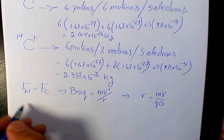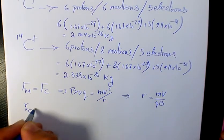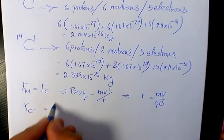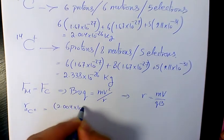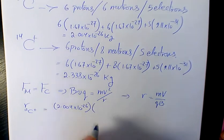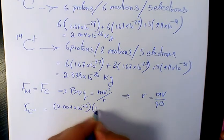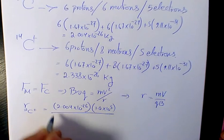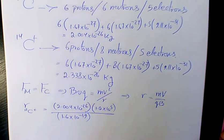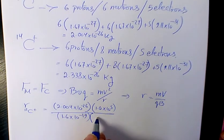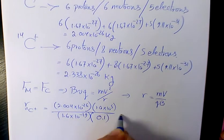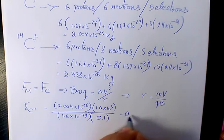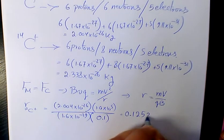For C12+, r = (2.004 × 10^-26)(1.0 × 10^5) / [(1.6 × 10^-19)(0.1)] = 0.1252 meters.